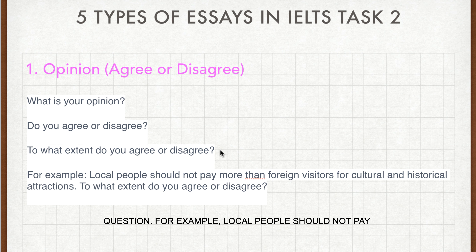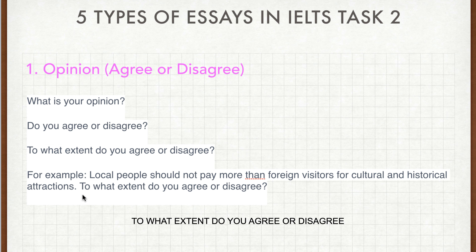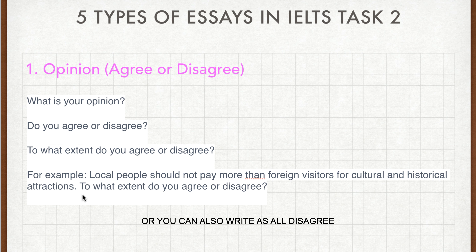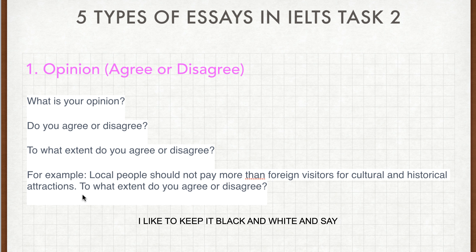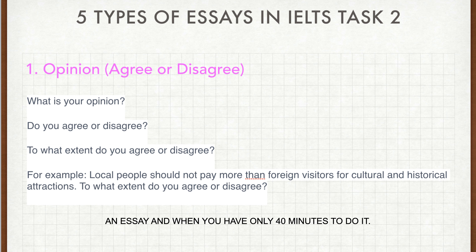Here's an example question: 'Local people should not pay more than foreign visitors for cultural and historical attractions. To what extent do you agree or disagree?' So you can write as fully agree, fully disagree, or maybe a bit of both. My personal tip is to keep it black and white — fully agree or fully disagree. It's much easier when you write an essay and only have 40 minutes to do it.